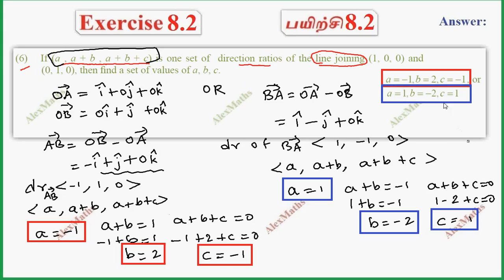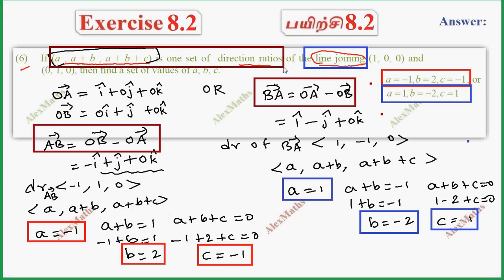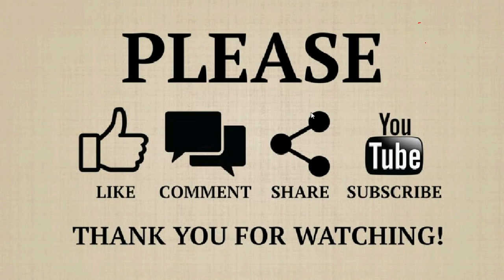So for the line joining, we record two cases: AB vector and BA vector. We record the direction ratios and equate the direction ratios for each case.